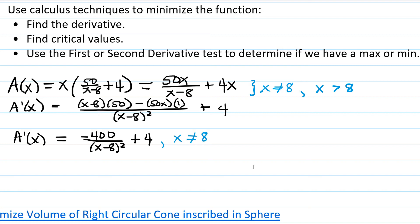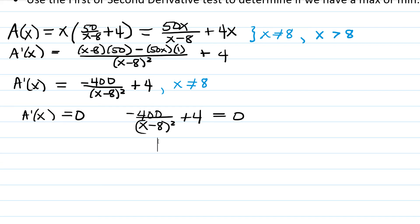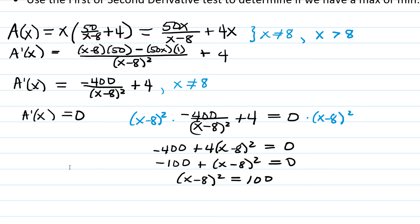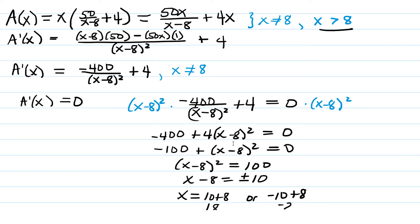Now let's find anywhere that A prime is equal to 0. We know where it's undefined at 8. That's the only value where it would be undefined. But let's find where it's equal to 0. So that would mean we would have negative 400 over X minus 8 quantity squared plus 4 equals 0. One way to solve this equation would be to multiply both sides by X minus 8 squared. This would give us negative 400 plus 4 times X minus 8 squared equals 0. I divided through by 4 and moved 100 over to the other side. So we get X minus 8 squared equals 100. By the square root property, we have X minus 8 is plus or minus 10, which means either X is 18 or X is negative 2. 18 works because that's a number bigger than 8, but negative 2 does not, so we have to throw that out. The only critical value is going to be at 18.